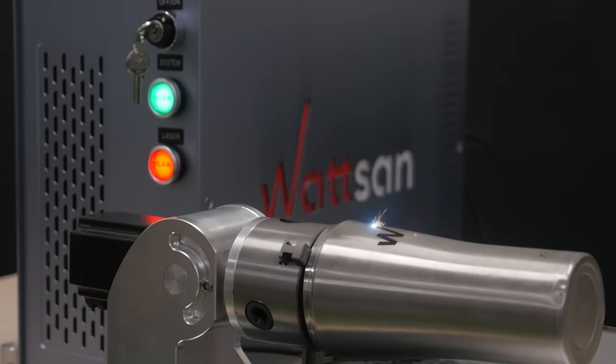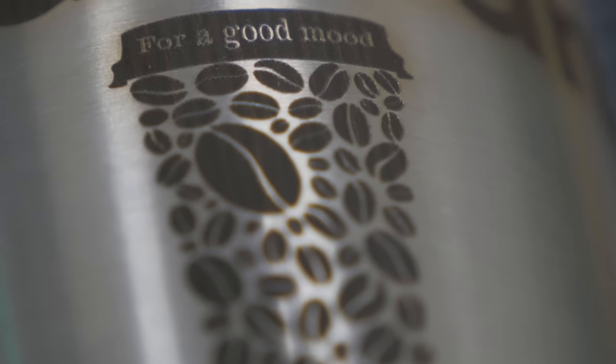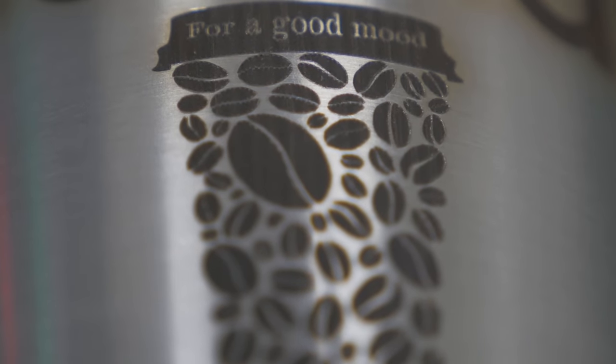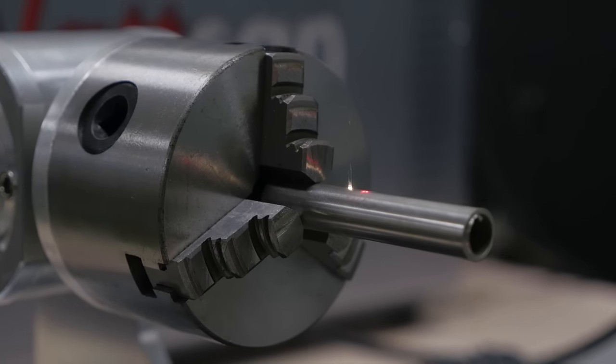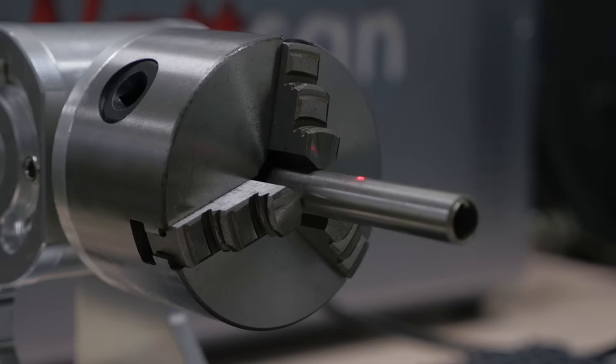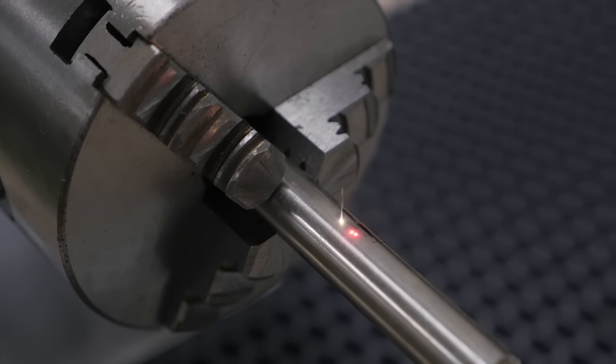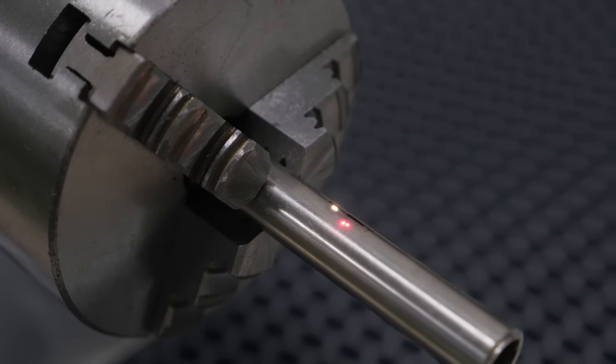Features and advantages of using a rotary device: The rotary device ensures precise positioning of the clamped product in relation to the laser beam and its area of effect. This allows obtaining high accuracy and repeatability of marking.